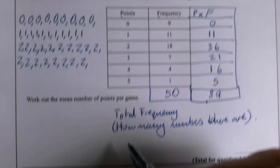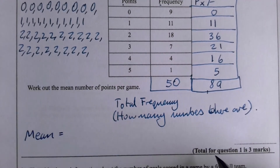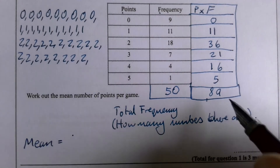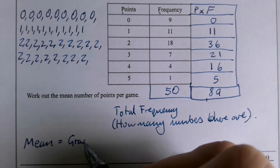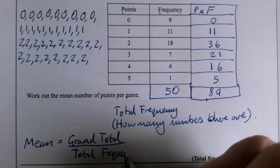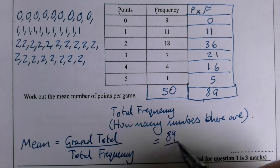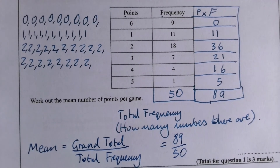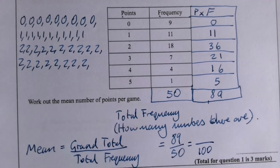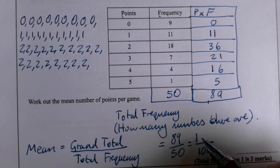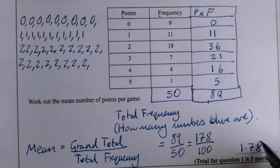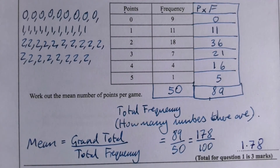The mean equals the grand total divided by the total frequency, so we have 89 divided by 50. On a calculator paper, just do 89 ÷ 50. A nice trick to divide anything by 50 is to double what you've got and divide by 100: double 89 is 178, and 178 ÷ 100 = 1.78. So the mean is 1.78 points per game.